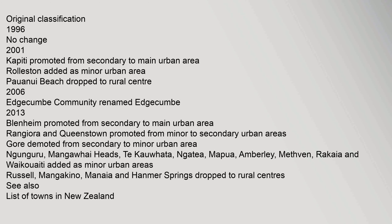Changes to classification: 1992 original classification. 1996: no change. 2001: Kapiti promoted from Secondary to Main Urban Area; Rolleston added as Minor Urban Area; Paraparaumu Beach dropped to Rural Centre. 2006: Edgecumbe Community renamed Edgecumbe. 2013: Blenheim promoted from Secondary to Main Urban Area; Rangiora and Queenstown promoted from Minor to Secondary Urban Areas; Gore demoted from Secondary to Minor Urban Area. Added as Minor Urban Areas: Mangawhai Heads, Te Kauwhata, Nautia, Mapua, Amberley, Methven, Rakaia and Waikouaiti.